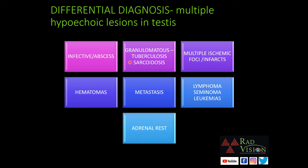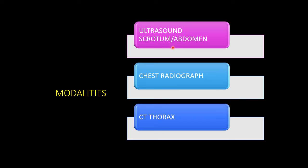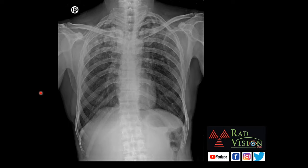The most probable primary differential considered was granulomatous etiology. As the patient also complained of cough and chest pain, he was subjected to a chest radiograph. The imaging workup was: ultrasound scrotum and abdomen first, followed by chest radiograph, and then CT thorax. The chest radiograph shows inhomogeneous opacities in bilateral upper lobes and an ill-defined cavitary lesion in the right upper lobe.